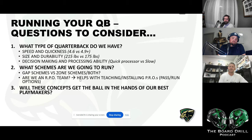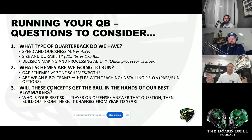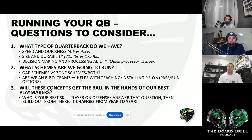Number three — most importantly — will these concepts get the ball in the hands of our best playmakers? There's a wide variety of things you can do on offense, but you need to answer: who's your best skill player? Is it a receiver, your quarterback, your running back? Once you answer that, build the entire system from there. As a high school coach, we can't recruit — we have what we have, and that changes year to year. So answer questions one, two, and three, then build the system out from there.